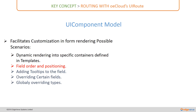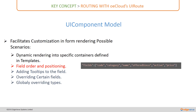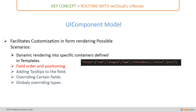The next scenario is field order and positioning. Suppose there is a product model created with properties in a particular order. If you want to change that, you can have a fields array in which you specify what the different fields are and what exact order they should be rendered in.